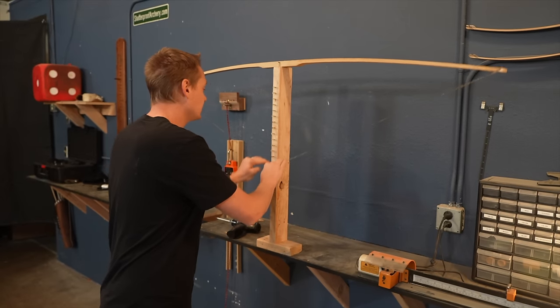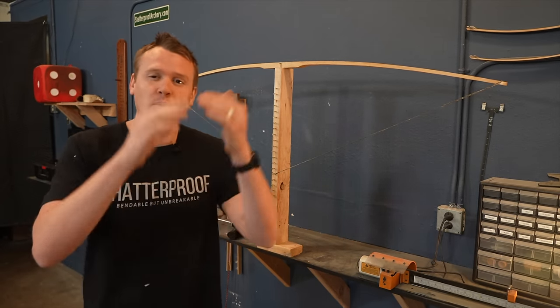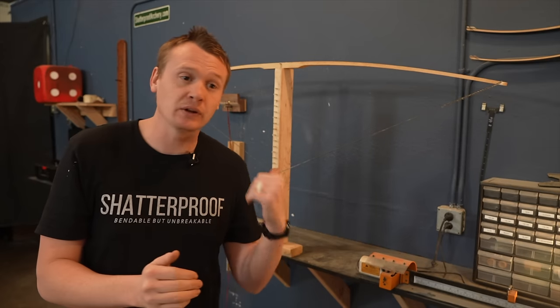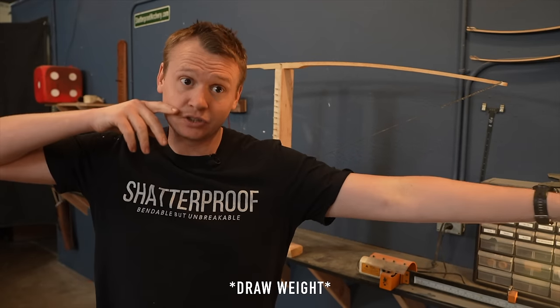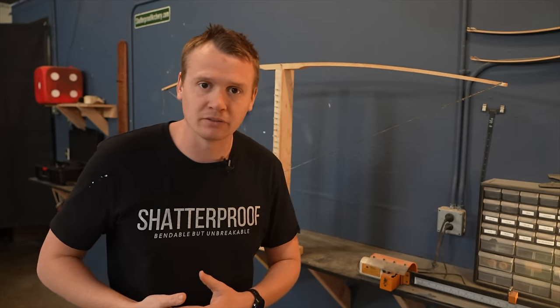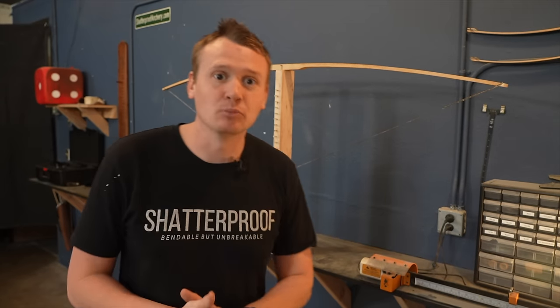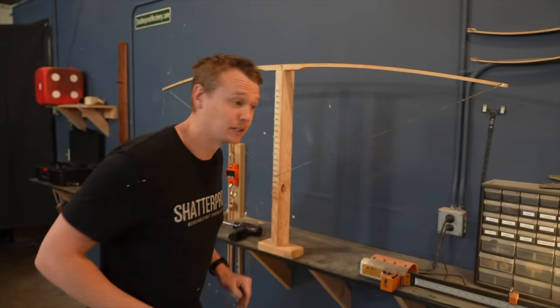Come back over to the tillering tree and start bending the bow down. Now, one of the tips is to never pull it with more poundage down on the tillering tree than your finished draw length. You can use a little scale to test this or just do it by feel. But for me, I'm going to try to make something in between 40 and 50 pounds. So I will not draw this down more than 50 pounds while it's on the tillering tree.